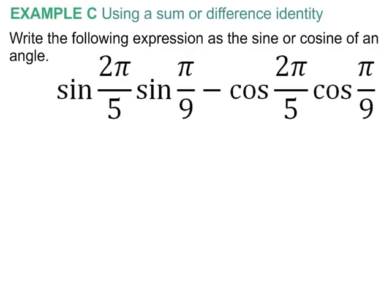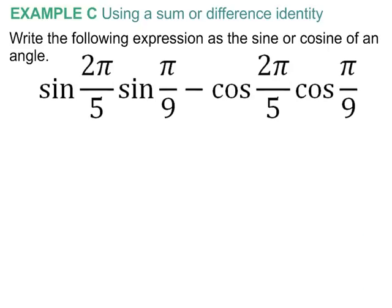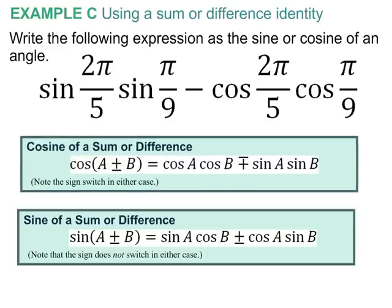In the last example, we are being asked to write the following expression as the sine or cosine of an angle. Notice that we are not being asked to evaluate it. So I might end up with sine of some angle or cosine of some angle, but I don't have to actually evaluate what the opposite over hypotenuse or adjacent over hypotenuse is. This is just asking us to use our sum and difference formulas to simplify this a little bit.